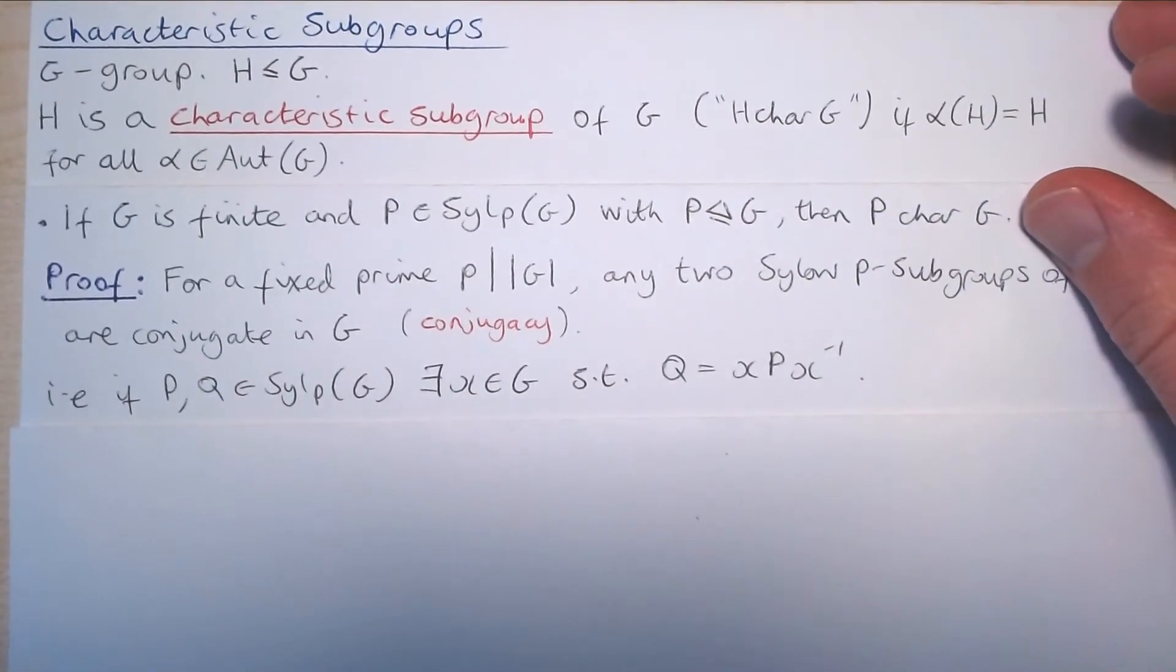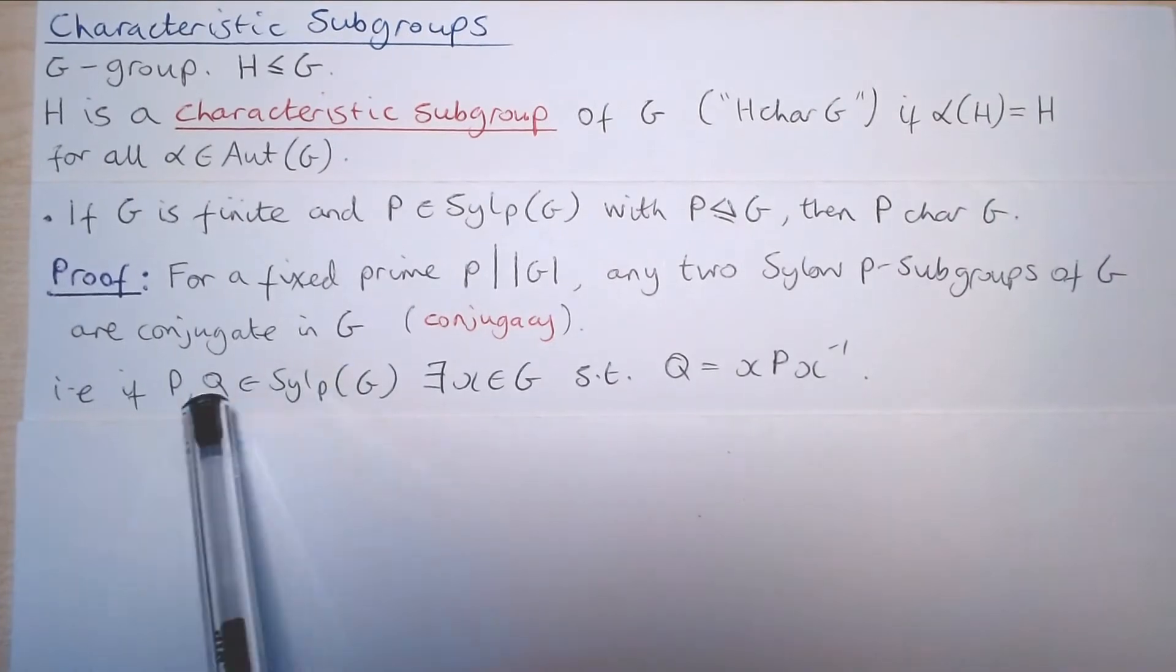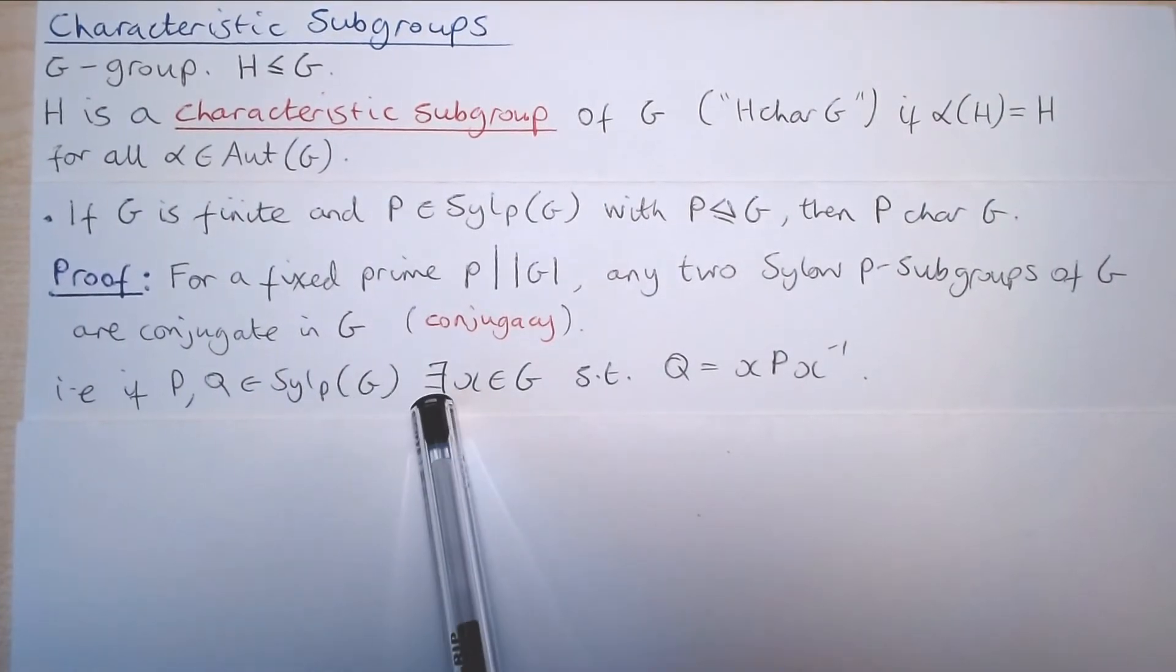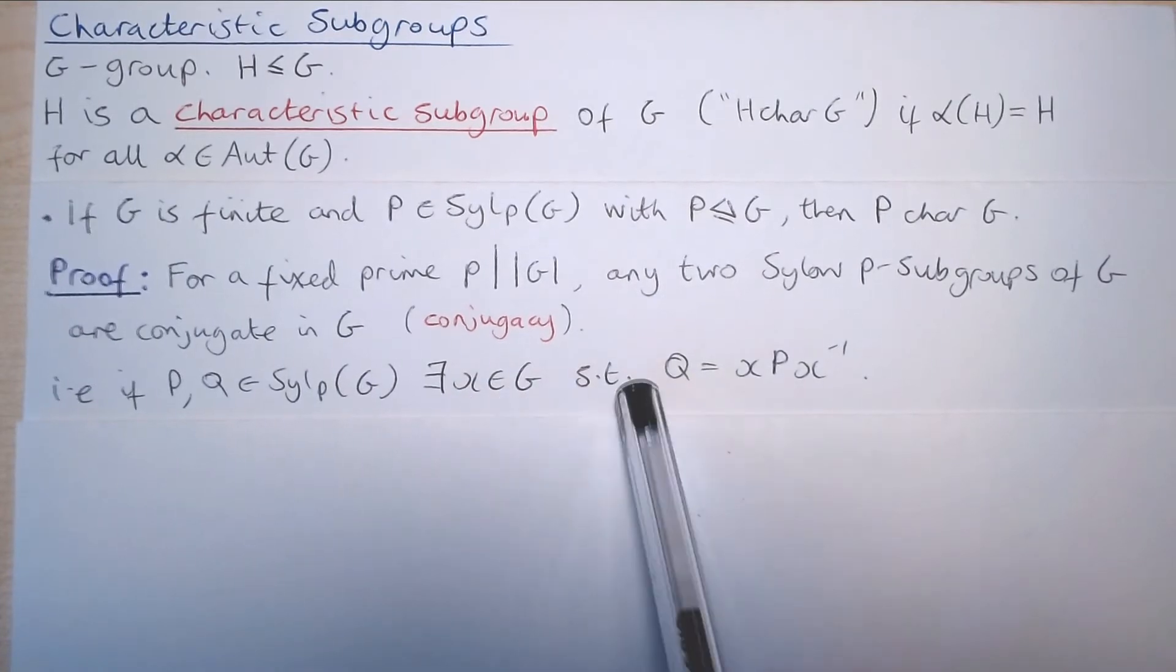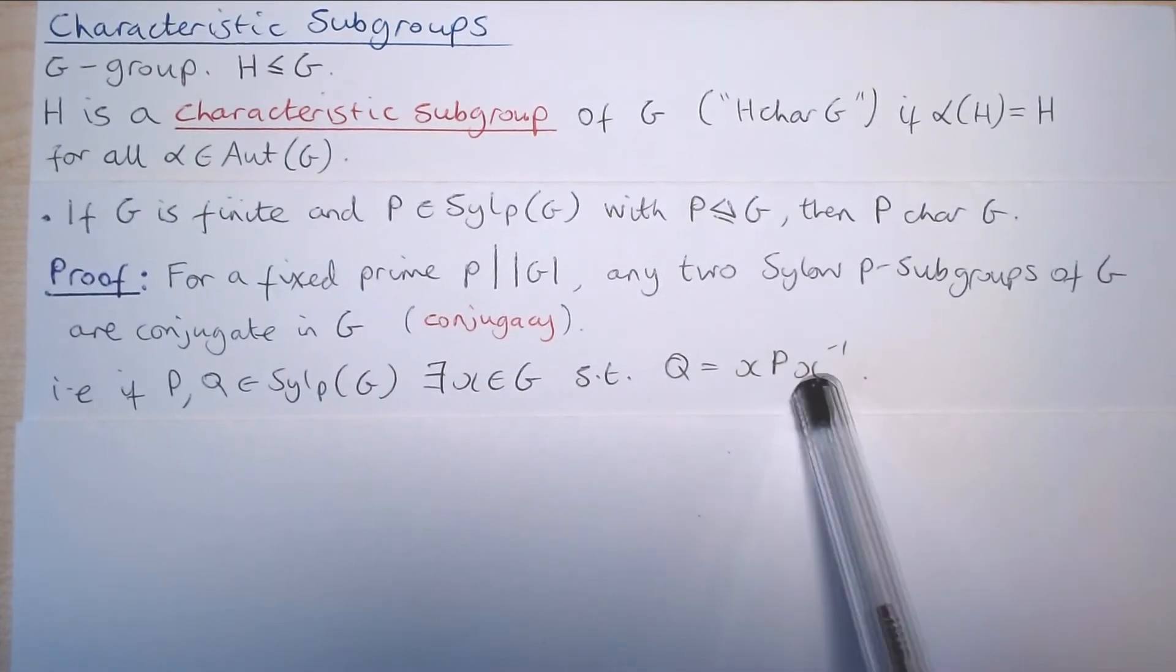In other words, if we have two Sylow P-subgroups of G, P and Q, for a fixed prime P, there exists an element X in G such that Q equals XPX^(-1).